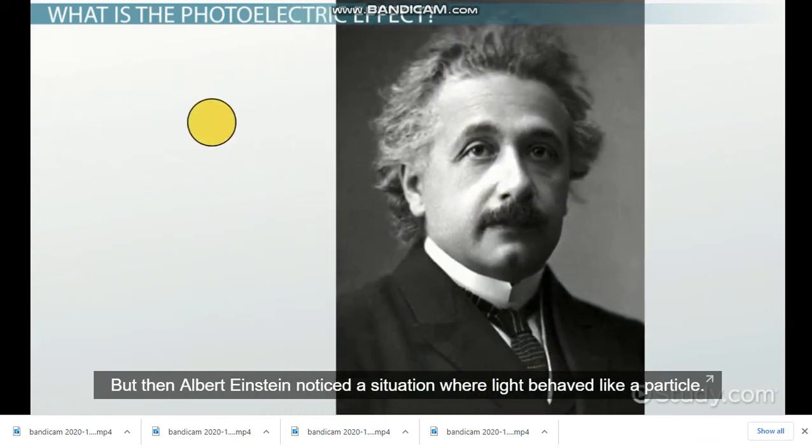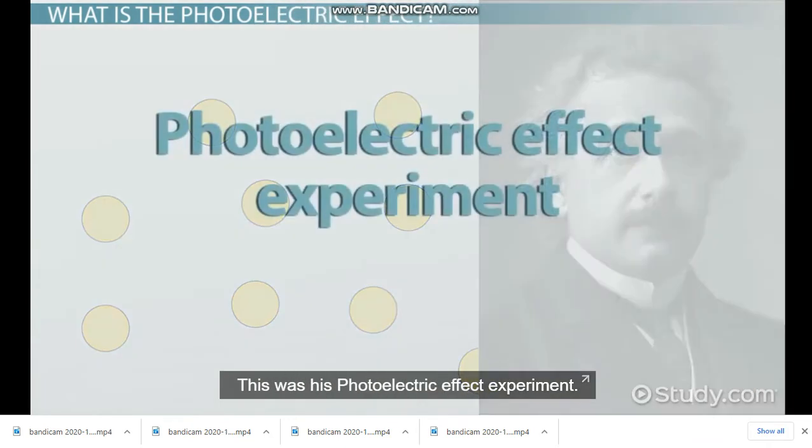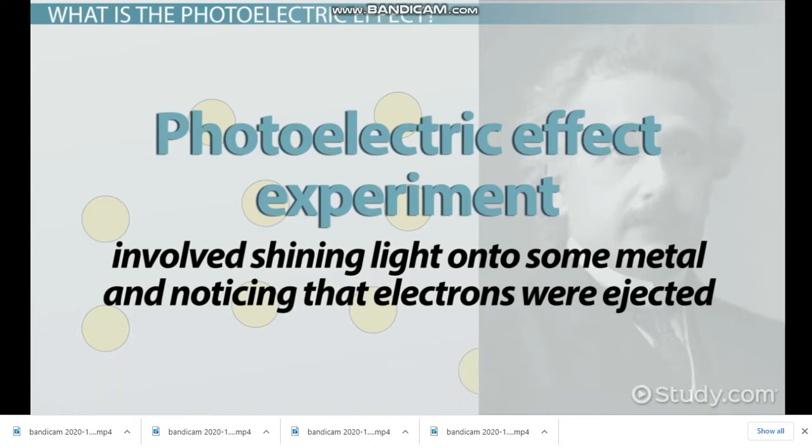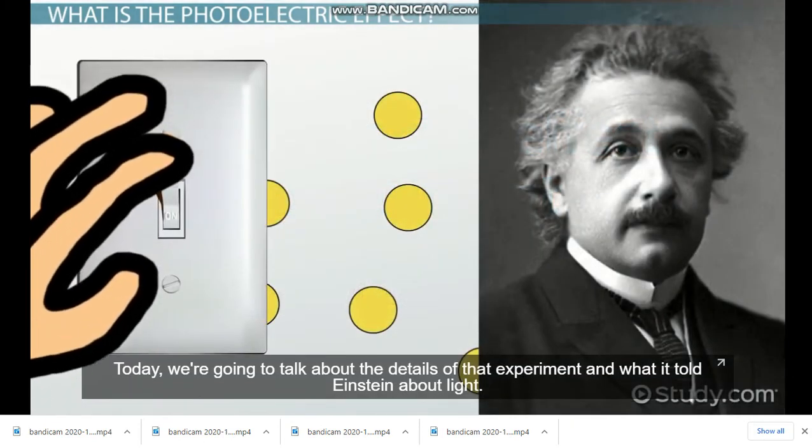But then Albert Einstein noticed the situation where light behaved like a particle. This was his photoelectric effect experiment. It involved shining light onto some metal and noticing that electrons were ejected. Today, we're going to talk about the details of that experiment and what it told Einstein about light.